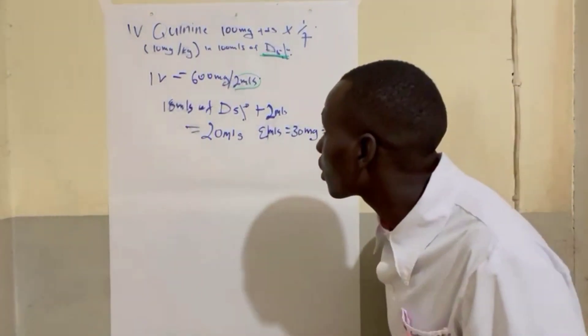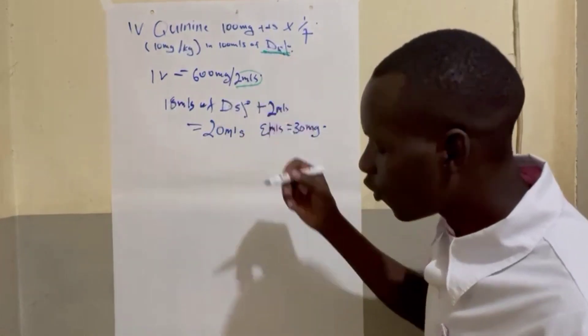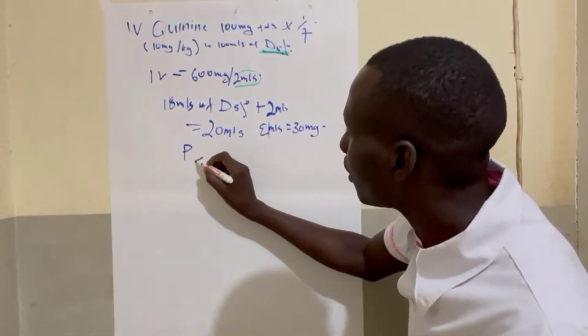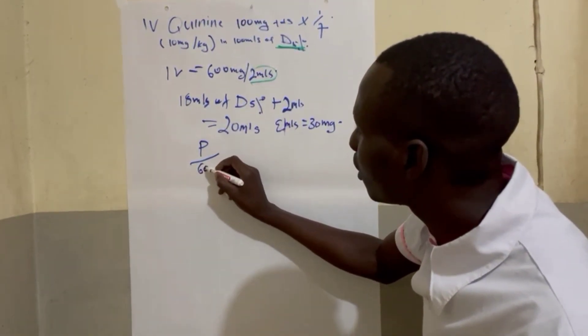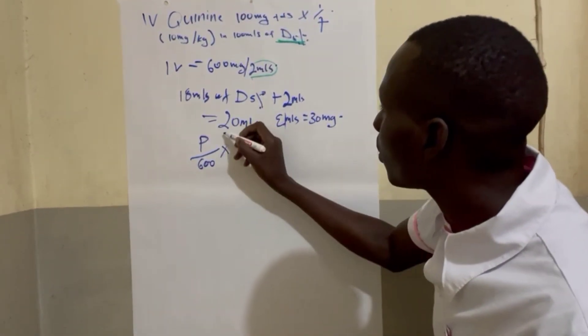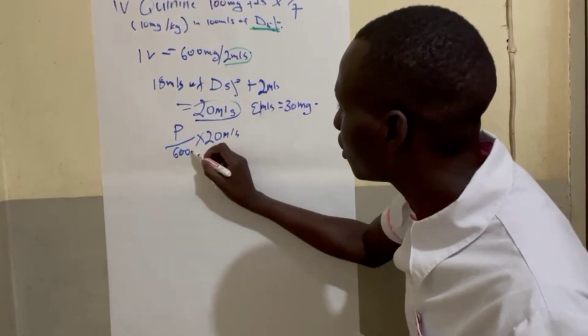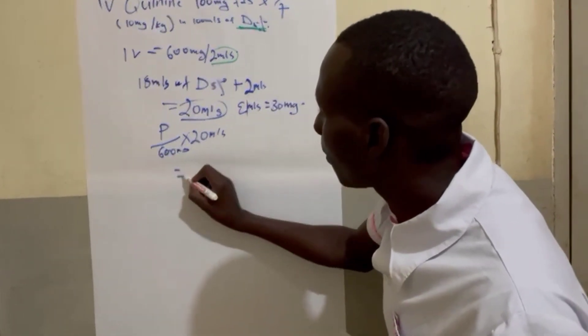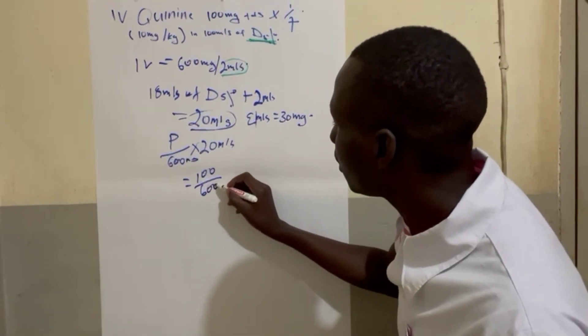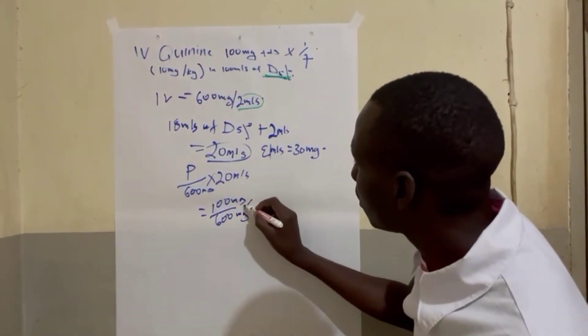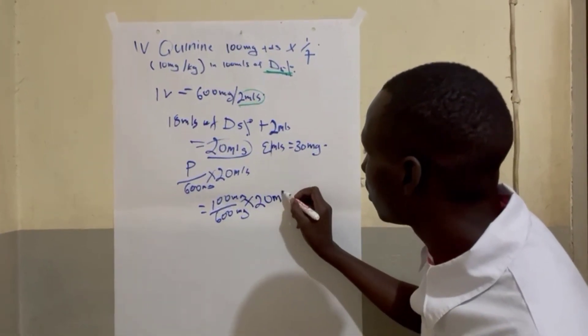Then doctor has prescribed 100mg. So we are going to use the same formula. We use prescribed amount over the total milligram, that is 600, times 20ml. So we are going to use 100 divided by 600 times 20ml.